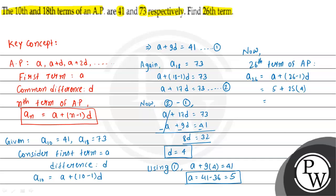This equals 5 plus 100, which gives 105. The 26th term of the given AP is 105.